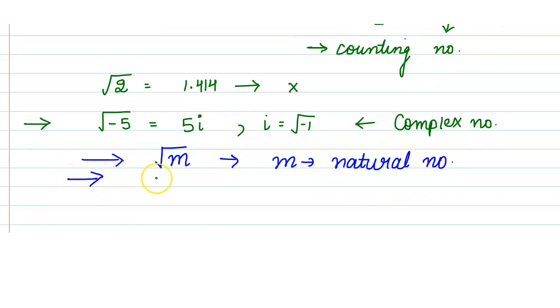But now we can see that on the number line we also have negative integers, and negative integers cannot be written in the form of root m where m is a natural number.